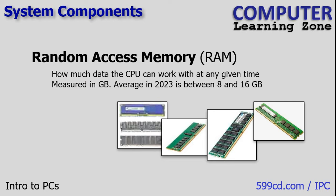Next up is memory. There's random access memory, or RAM, which represents how much information the computer can work with at any given time. RAM today is measured in gigabytes. RAM is erased when the power goes off — so if you unplug the computer, whatever's in memory is gone. If you're writing a letter in Microsoft Word, that letter is generally stored in RAM while you're working on it. So if you turn the computer off without saving your letter, you're going to lose it. Most computers sold today have between 8 and 16 gigabytes of RAM.